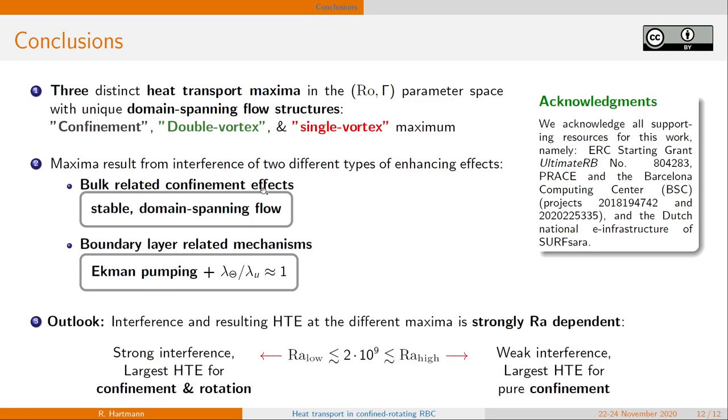As an outlook, this interference appears to be strongly Rayleigh number dependent. What we saw here is like a low Rayleigh number regime where we achieve the largest heat transport enhancement for combining confinement and rotation at the double vortex maximum. But for large Rayleigh numbers, this interference is weaker. So the largest heat transport enhancement is observed at pure confinement. But anyhow, this is a different topic for another talk, another time.